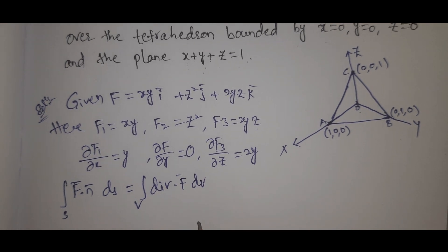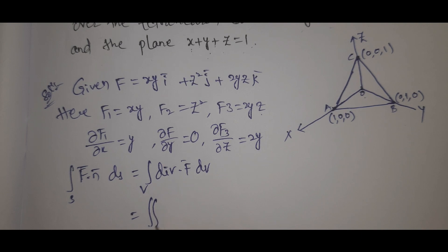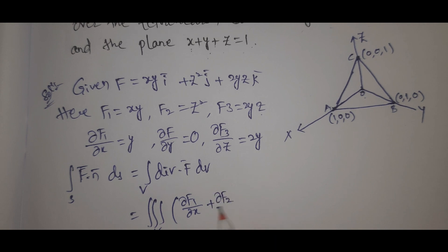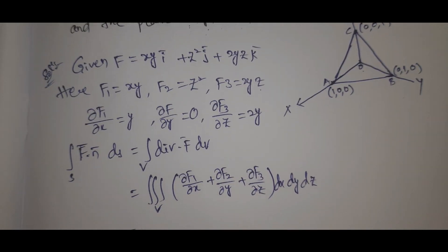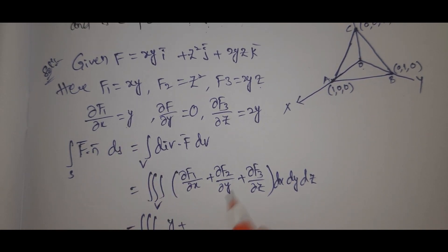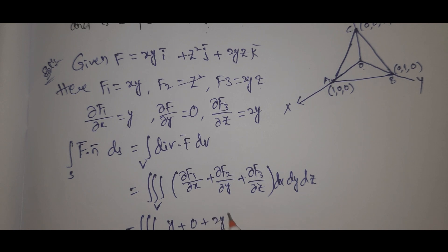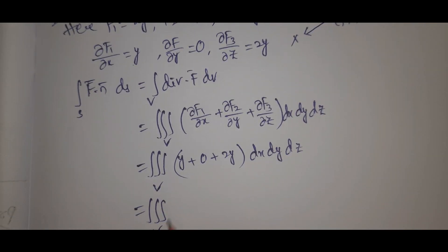The divergence is ∂F1/∂x plus ∂F2/∂y plus ∂F3/∂z, which equals y plus 0 plus 2y equals 3y. So this becomes the triple integral over V of 3y dx dy dz.